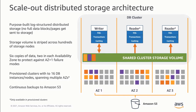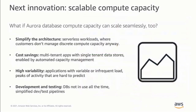Initially, we offered Aurora in what we call provisioned mode. This means on top of this scalable storage layer, you provision discrete compute capacity. You can have a cluster with up to 16 database instances, all reading from the same storage volume. One of those instances always has to be a writer. But what if the Aurora database compute capacity can scale seamlessly too? This brings us to the next big innovation in Aurora.